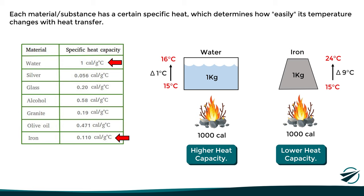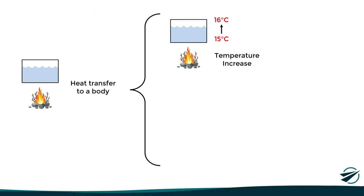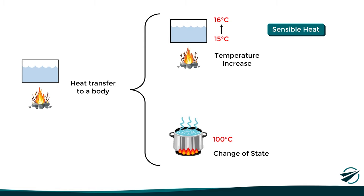With all that we have discussed, it is natural to think that whenever heat is added to a body or substance, its temperature will increase according to its specific heat, and in most cases this is true. This heat used to increase the temperature of a body or substance is known as sensible heat. However, there is another effect that heat input can produce, and that is a change of state. During this process, despite the fact that heat is being added, the temperature remains constant, because the heat is being used to change the state of the body or substance rather than increasing its temperature. This heat used to change state is known as latent heat.